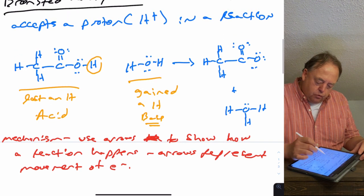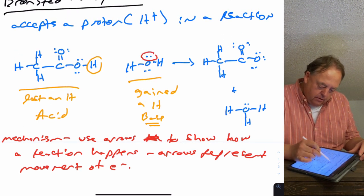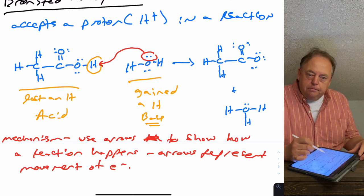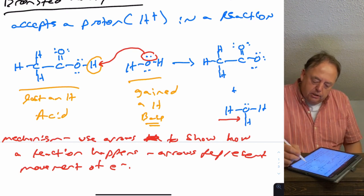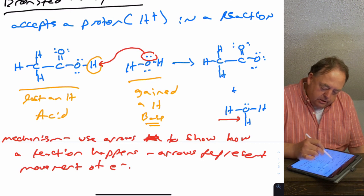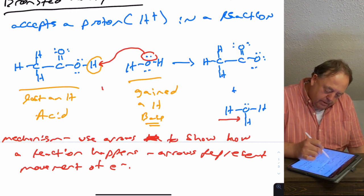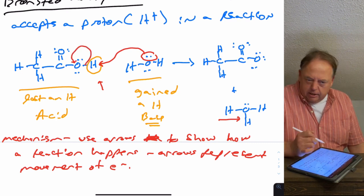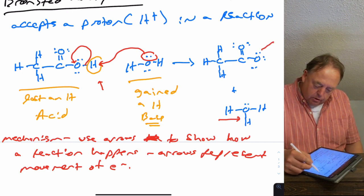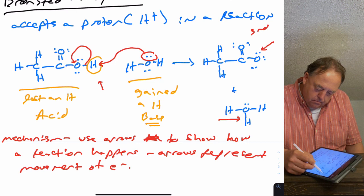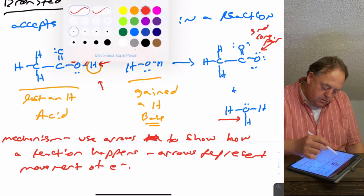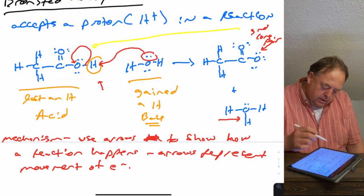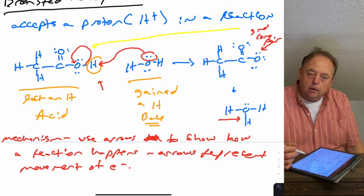What happened in this reaction is a lone pair on the oxygen of water made a bond to this hydrogen — that's where this new line came from, so now you have a new bond from oxygen to hydrogen in the product. When you made that bond to the hydrogen, the two electrons in the O-H bond became a lone pair on the oxygen — that's where that third lone pair came from.